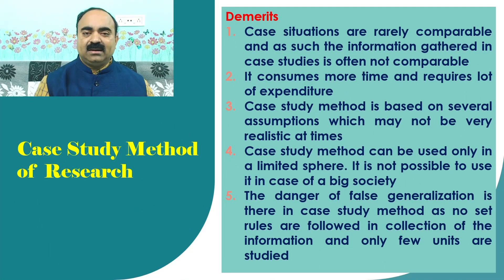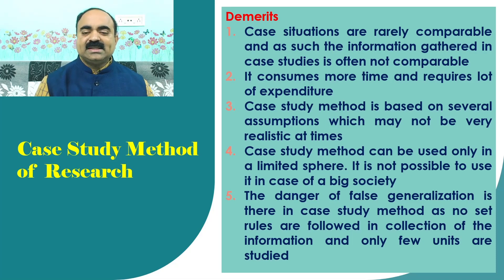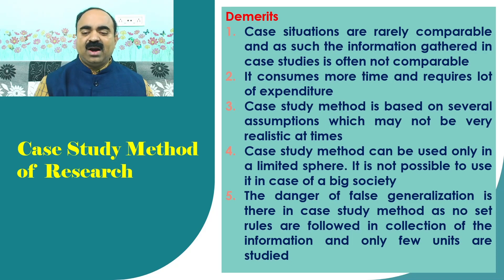Demerits of case study method. 1. Case situations are rarely comparable and as such, the information gathered in case studies is often not comparable. 2. It consumes more time and requires a lot of expenditure. 3. Case study method is based on several assumptions which may not be very realistic at times. 4. Case study method can be used only in a limited sphere; it is not possible to use it in case of a big society. 5. The danger of false generalization is there in case study method as no set of rules are followed in collection of the information and only few units are studied.